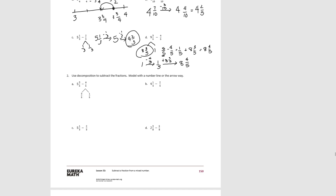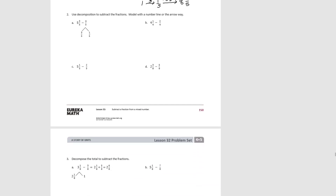You could have shown that with a number line instead of the arrow way. For number 2, it specifically tells us to decompose the fraction and then model it. In A, we've decomposed 4 fifths into 3 fifths and 1 fifth. We start with 5 and 3 fifths, subtract the 3 fifths leaving 5, and then subtract the 1 fifth, which leaves us with 4 and 4 fifths.